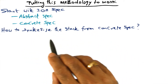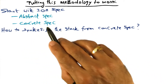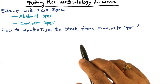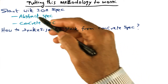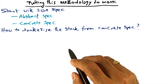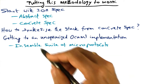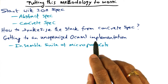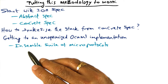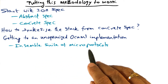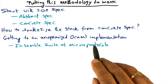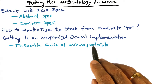The next part is: how do we synthesize this stack from the concrete spec? In other words, how do we generate the OCaml code that represents this abstract specification for the TCP/IP protocol stack? To get an unoptimized OCaml implementation starting from this concrete spec, we use the Ensemble suite of micro protocols that the authors of the Ensemble paper, assigned to you, have synthesized at Cornell.